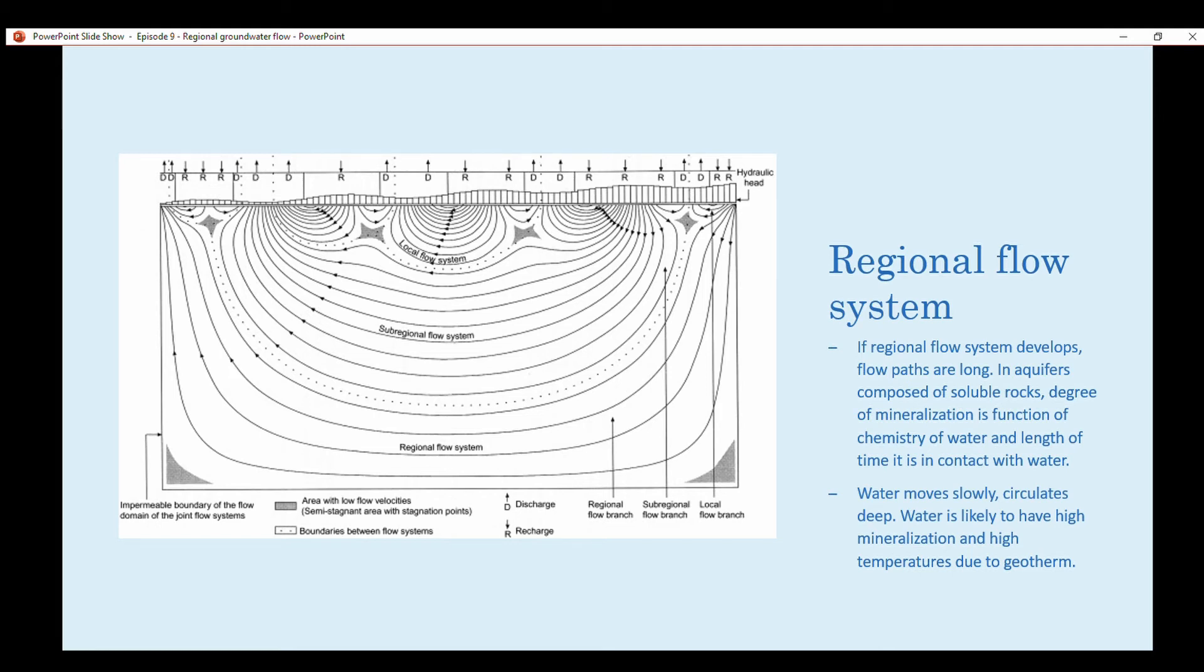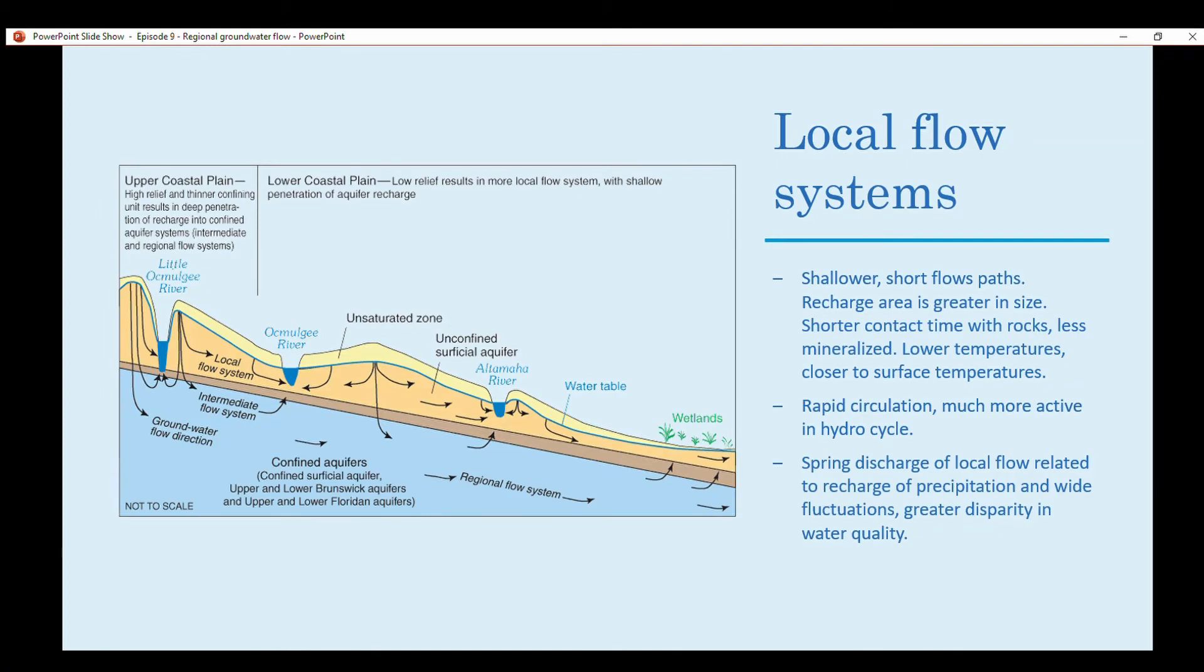When we're talking about a local flow system, it's much shallower and has short flow paths. Its recharge area is greater in size, the shorter contact time with rocks, and it's less mineralized. You have lower temperatures closer to surface temperatures, you have rapid circulation, so it's much more active in the hydrologic cycle.